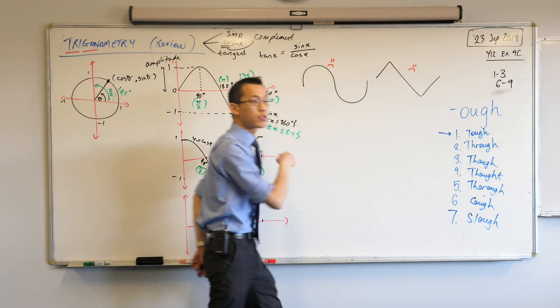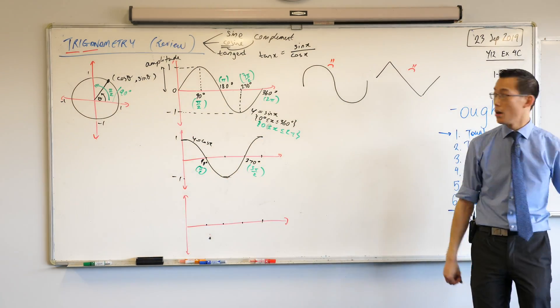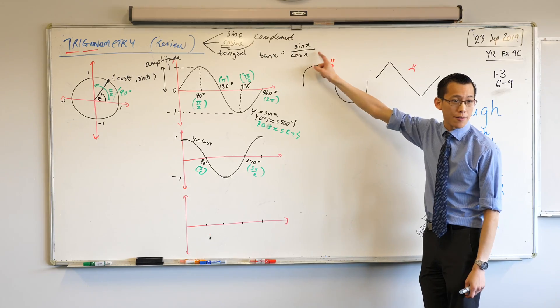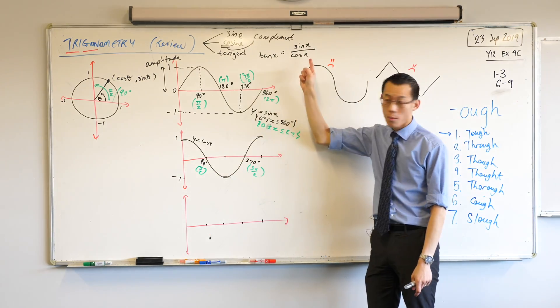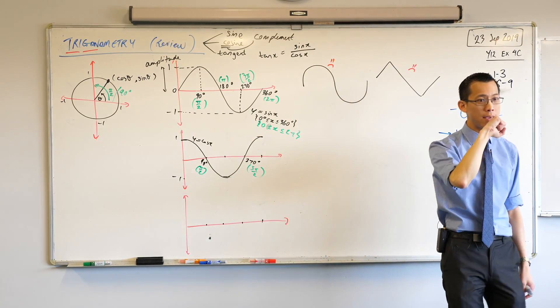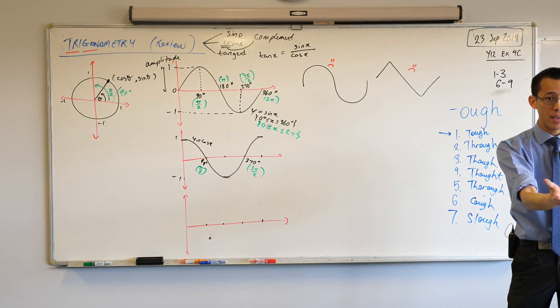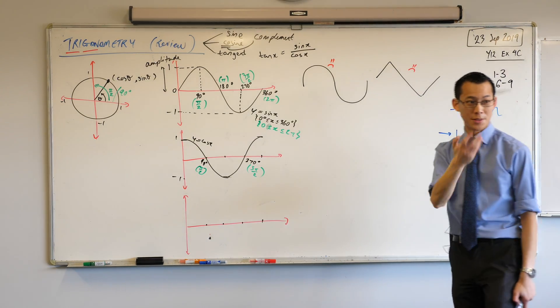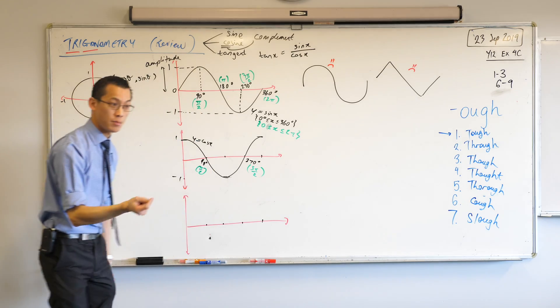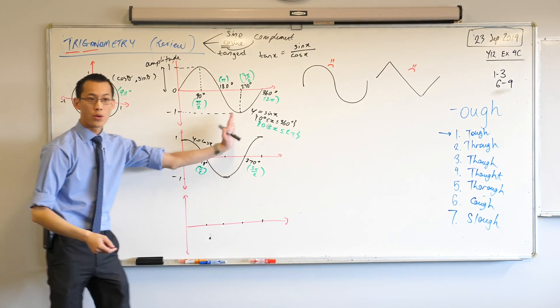Now as a consequence of the cos graph being zero at those two points, what's going to happen to the tan graph if your cos graph, your denominator, is zero? What does that mean for tan? You get an asymptote right, because you can't exist when you're dividing by zero.